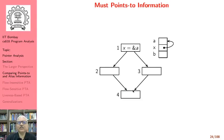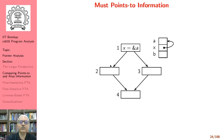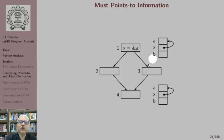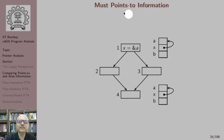On the other hand we can think of must points-to information. In a slightly changed program where the second assignment is gone, x points to a, and when we reach statement 4 we know that regardless of which path is taken, x definitely holds the address of a along every path. So this is must points-to information.